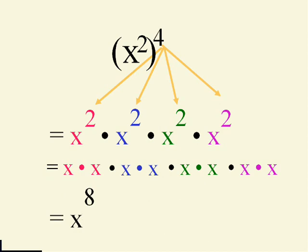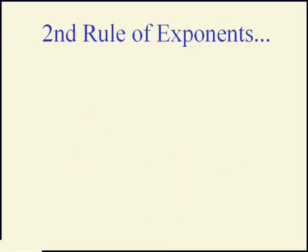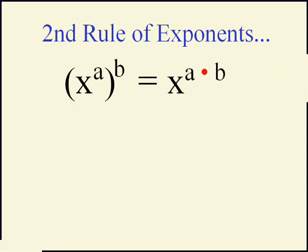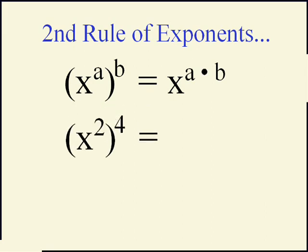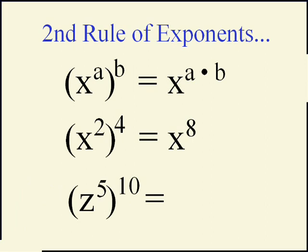Let's come up with a shortcut — the second rule of exponents: x to the a, to the b, is going to be x to the a times b. For instance, x to the second to the fourth, rather than writing it all out, is x to the eighth. That's really going to save us a lot of writing.